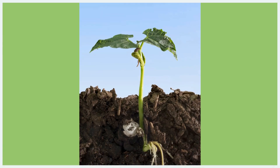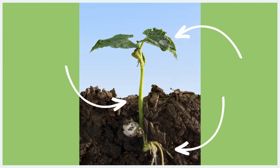In this set of activities, your classroom will explore plant parts. There are three main parts of a plant: roots, stems, and leaves. Each part plays a role in helping the plant grow and be healthy.